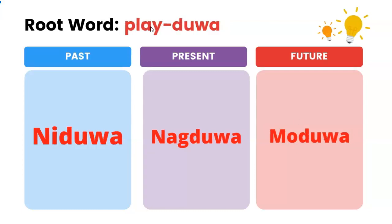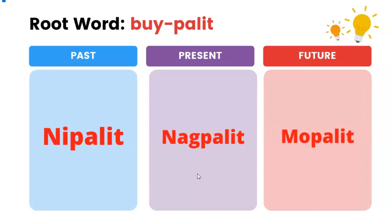Play — duwa. Past: nidua. Present: nagduwa. Future: muduwa. Buy — palit. Past: nipalit. Present: magpalit. Future: mupalit.